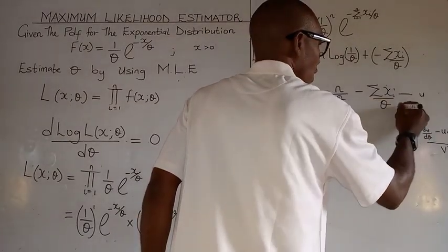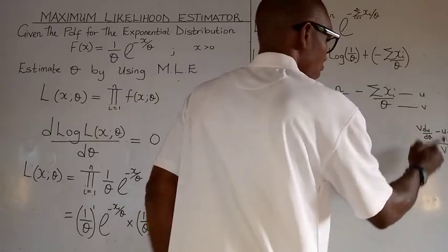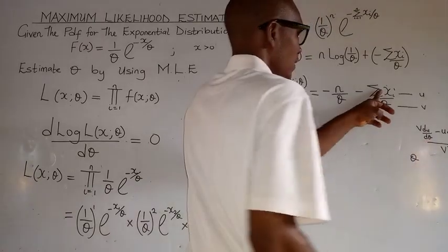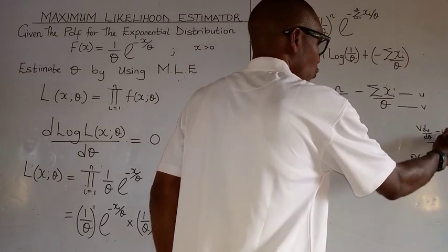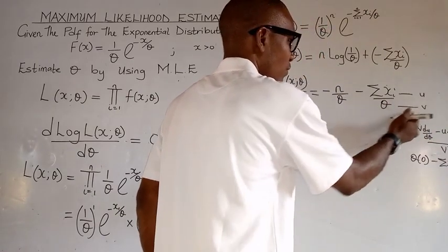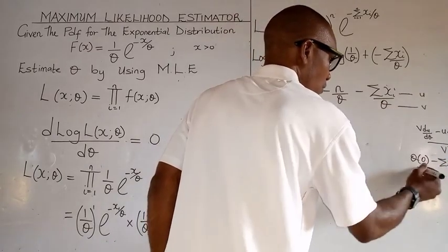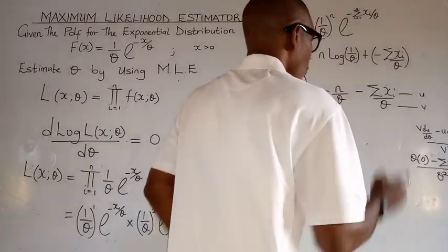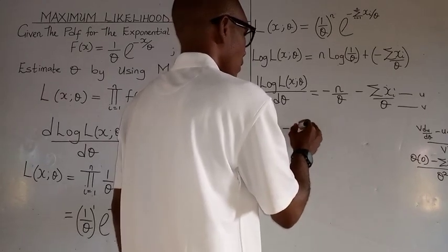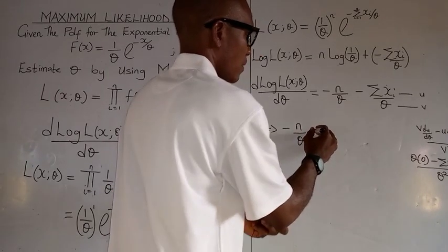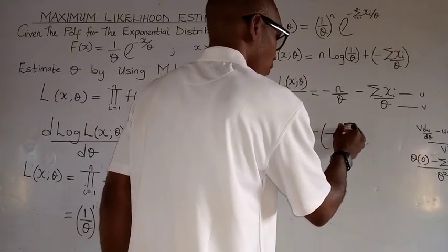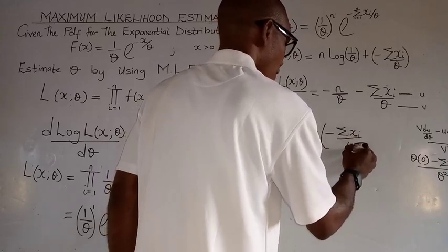If we take this to the view: we say this is v, times du over d-theta. Since there is no value for theta in u here, it becomes zero. Minus u — we bring it down — which is summation of x_i, multiplied by dv over d-theta. If you differentiate v with respect to theta, you get one, all over v squared, which is theta squared. So after differentiating altogether, we get: minus n over theta, minus summation of x_i, all over theta squared.